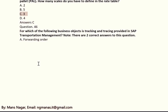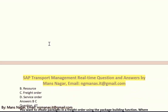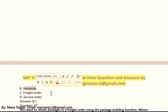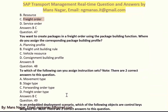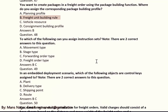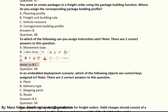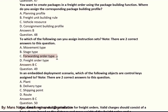For which of the following business objects is tracking and tracing provided in SAP Transportation Management? The answers are B and C: resource and freight order. You want to create a package in a freight order using the package building function. Where do you assign the corresponding package building profile? To which of the following can you assign instruction sets? The answers are B and C: B means stage type, C means forwarding order type.